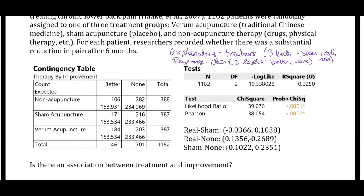Here we have our contingency table, which has been already reduced for us with actual counts. For example, 106 people got better after six months with a non-acupuncture therapy, and 282 people got no relief after six months with non-acupuncture therapy. The first entry in each cell is the observed count, and the second entry in each cell is the expected count.